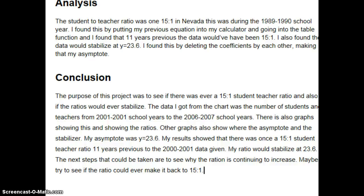Next steps that could be taken would be to see if my ratio would continue to increase, and maybe if it could ever make it back to 15 to 1. This project was simple once you understand what you were doing. The graphing in Excel was straightforward if you knew what to do — you just had to learn how to use the control button to switch columns. Figuring out how to use the equation and making it appear in the graph was also difficult, but with the help of some friends I figured it out. This project was very helpful for learning Excel.